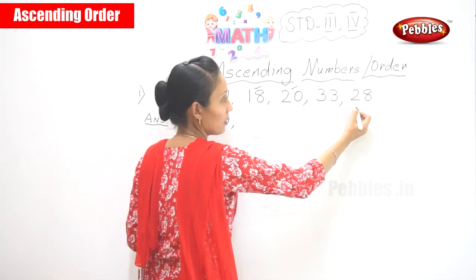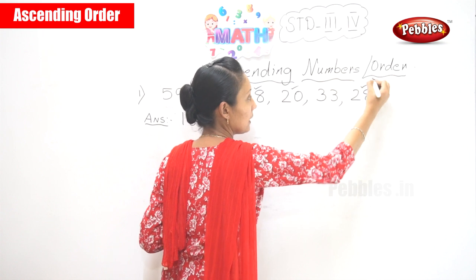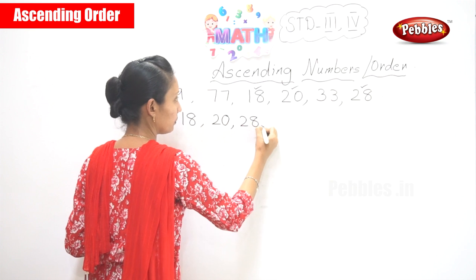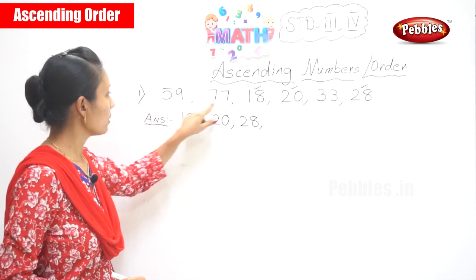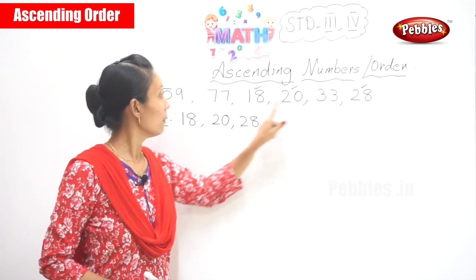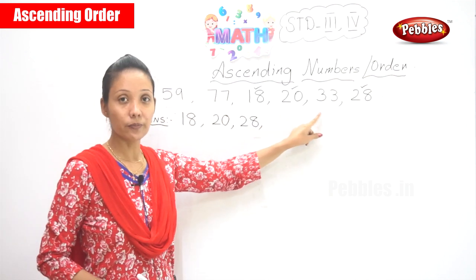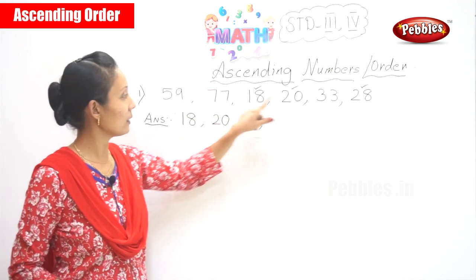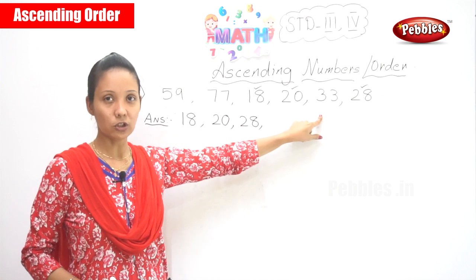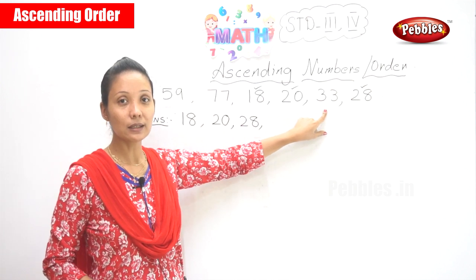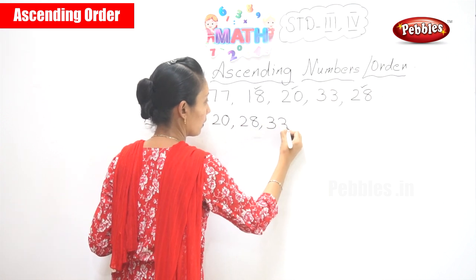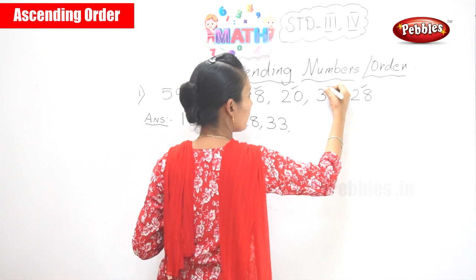After 20, what's the next number? Yes, 28. So you have written that number also — 28 is over. Now you have only 3 numbers left. So you need to write 33. You are finished with 33.